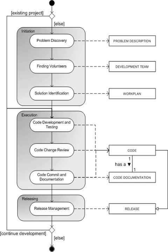It is a common mistake to start a project when contributing to an existing similar project would be more effective. To start a successful project it is very important to investigate what is already there. The process starts with a choice between adopting an existing project or starting a new project. If a new project is started, the process goes to the initiation phase; if an existing project is adopted, the process goes directly to the execution phase.